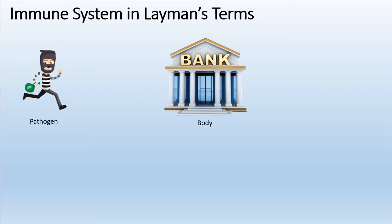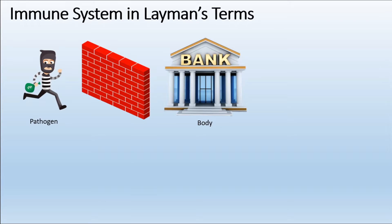The pathogen tries to enter the body and create problems within it, similarly to how this robber wants to create mayhem within the bank. The first hindrance he is going to face is the wall. We are assuming this bank is a heavily guarded central bank with boundaries or walls around itself, which we can compare with our biggest organ — the skin — because skin is there to protect us against pathogens.